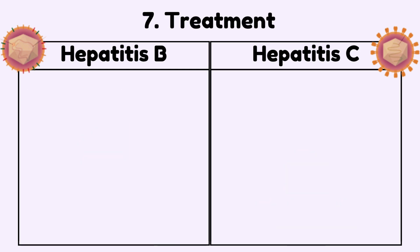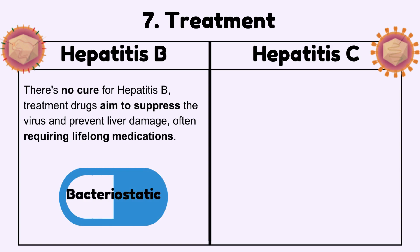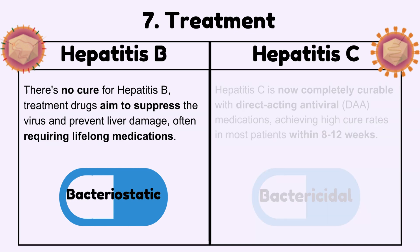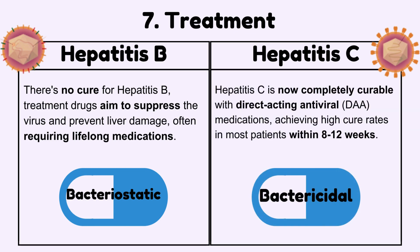Treatments of viruses: There is no cure for Hepatitis B; treatment drugs aim to suppress the virus and prevent liver damage, often requiring lifelong medications. Hepatitis C, on the other hand, is now curable with direct-acting antiviral medications, achieving high cure rates in most patients within 8 to 12 weeks.